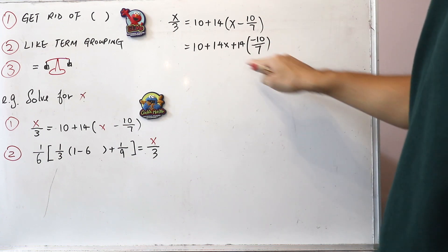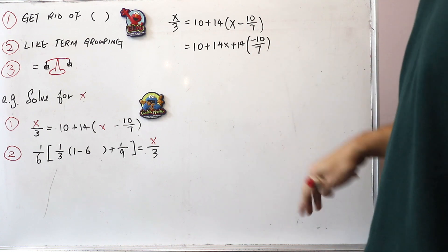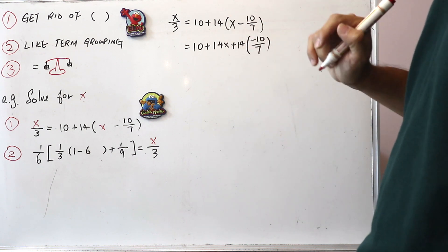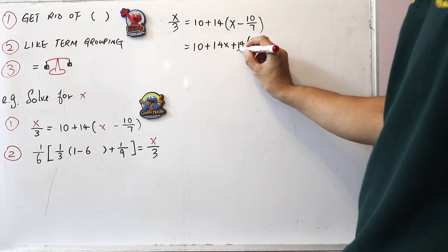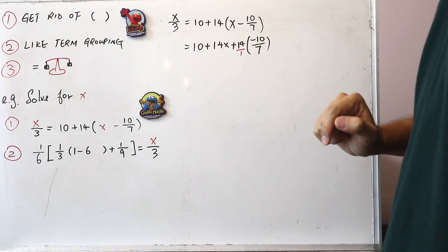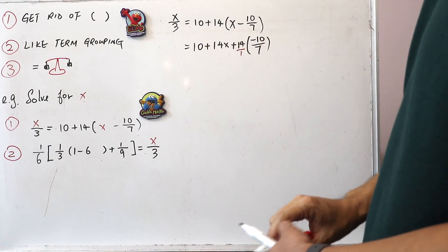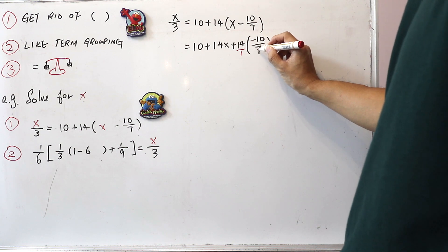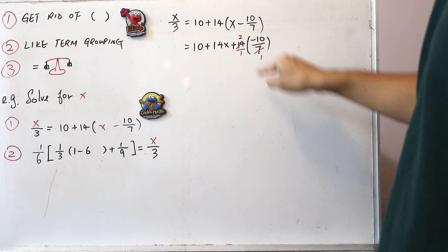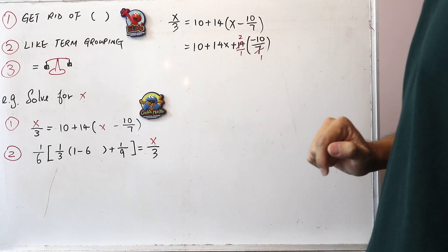Now we do some simplification. Although 14 is written as a whole number, it actually means 14 divided by 1, where 14 is the numerator and 1 is the denominator. So now it becomes clear how to simplify: we have a 7 in the denominator, so 7 divided by 7 is 1, and 14 divided by 7 is 2. So we have 2 times minus 10, which is minus 20.